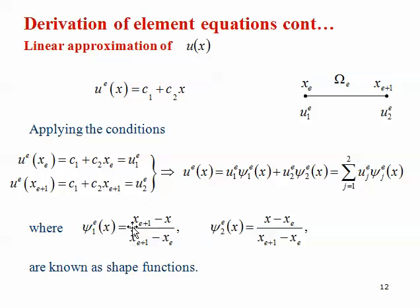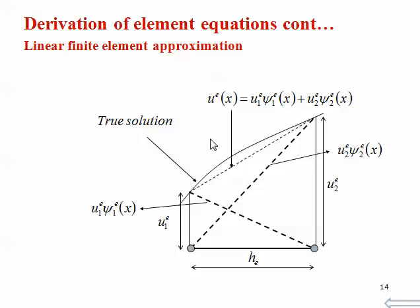The linear shape function ψ₁ = (x_{e+1} − x) / h_e equals 1 at x = x_e and 0 at x = x_{e+1}, as required. ψ₂ is similarly derived. The idea behind linear approximation is that u₁ and u₂ are the nodal values and the solution is linearly interpolated between them. The actual solution may be curved, and this difference is the error — but by decreasing the element size h_e, this error becomes negligible. This is the fundamental principle of refining the mesh in FEM.